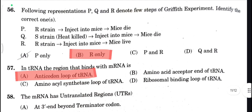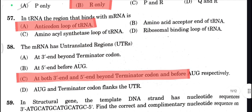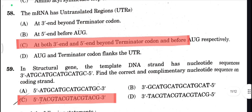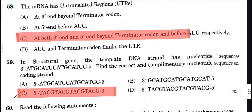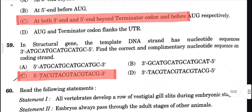R only — B option is your correct answer. Next, anticodon loop of tRNA is your correct answer. Next, at both 3' and 5' — beyond terminator codon and before AUG respectively — is your correct answer here.